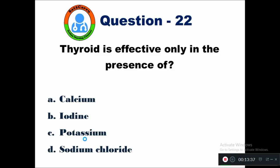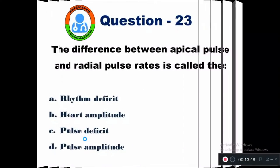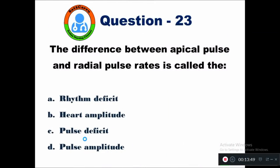Question 22: Thyroid is effective only in the presence of — option A calcium, B iodine, C potassium, D chloride. Thyroid is effective in the presence of iodine.